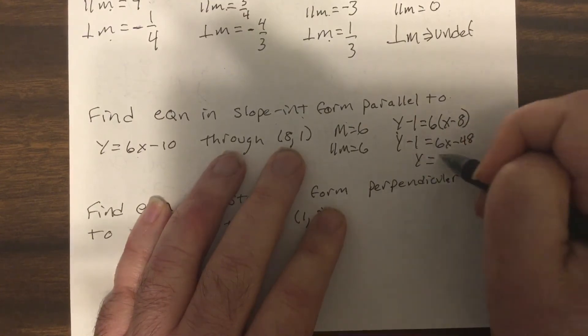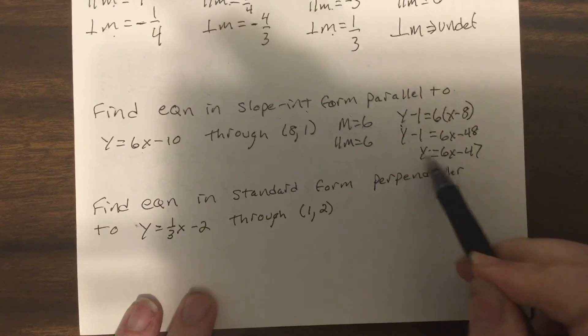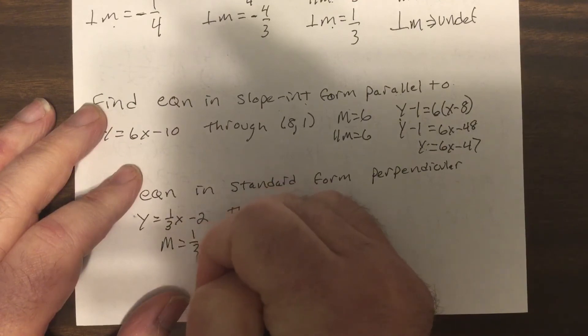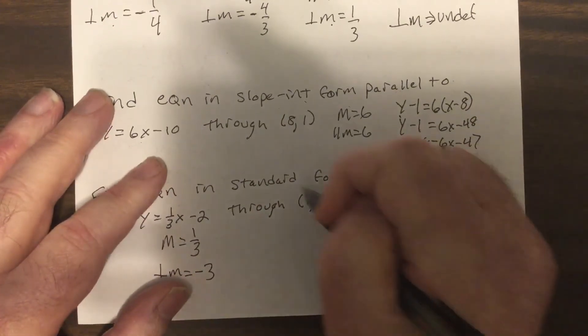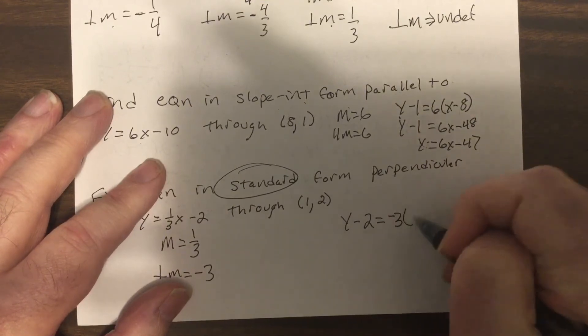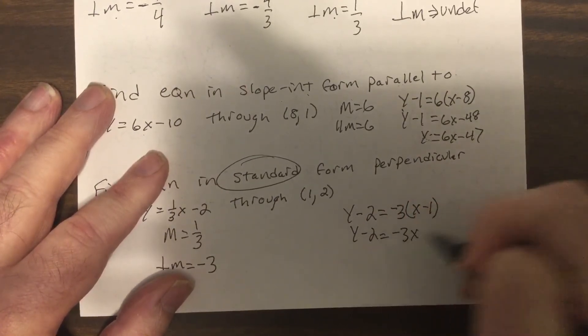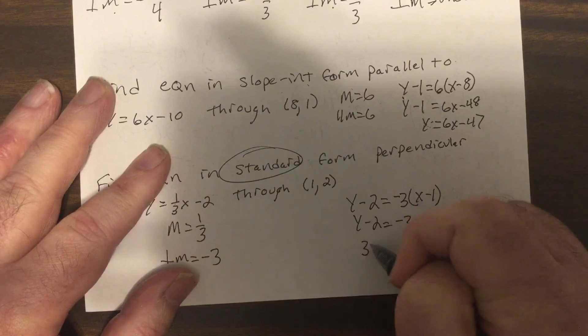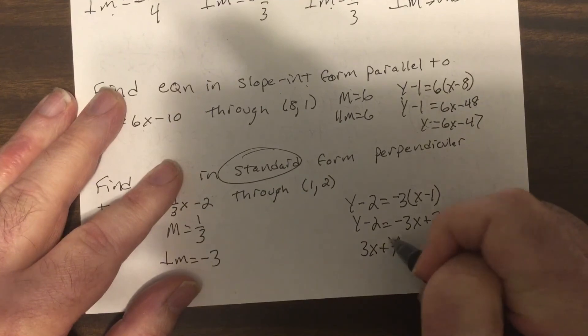I add 1: y equals 6x minus 47. Slope-intercept, you solve for y. Now this one, the slope is a third, so the perpendicular slope is negative 3. I want it in standard form, so I use point-slope because that's what I'm given. So it'd be y minus 2 equals negative 3(x plus 3). I'm gonna add 3x and add 2 to both sides: 3x plus y equals 5.